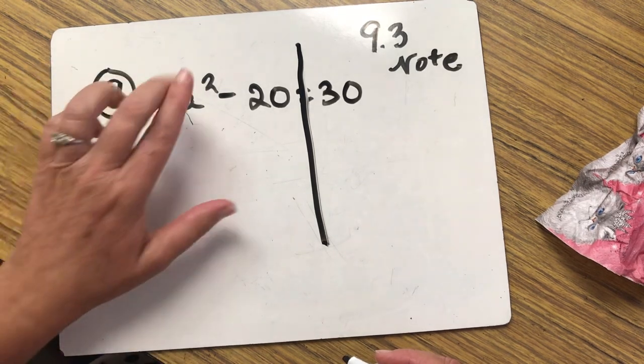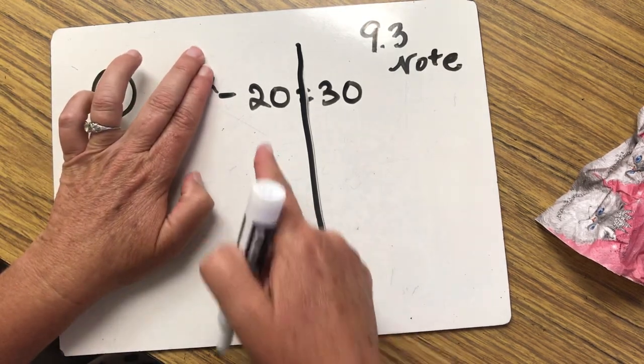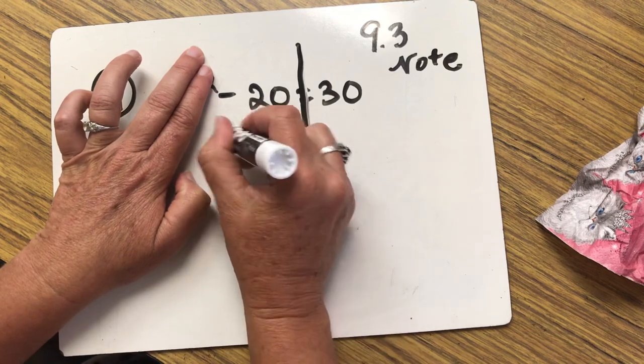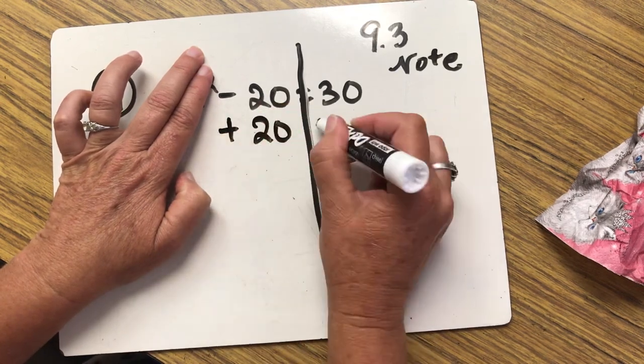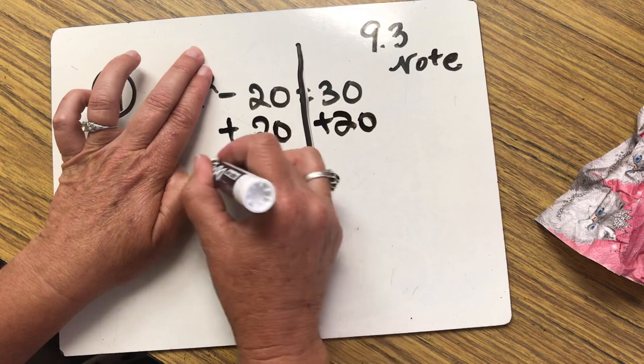Let's take our hand and cover up the letter. We first need to get rid of that minus 20. We're going to take the opposite of minus 20 and add 20 to both sides.